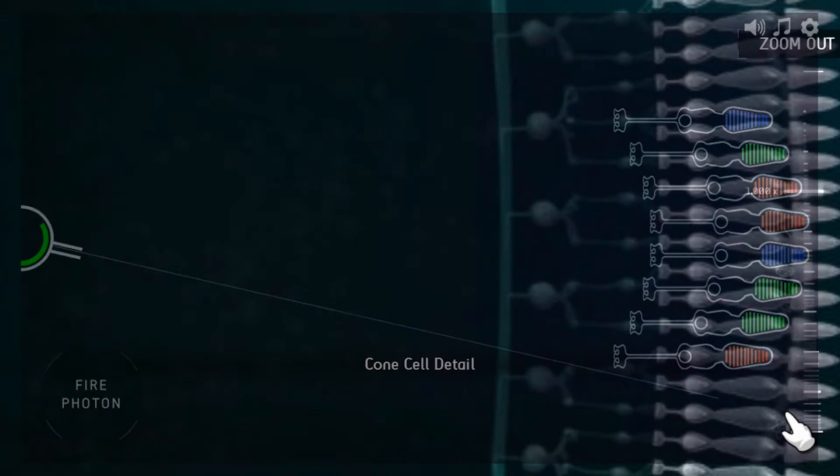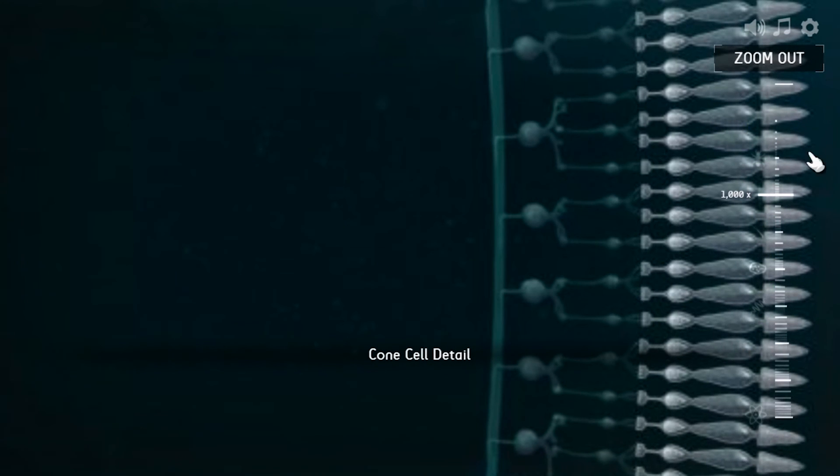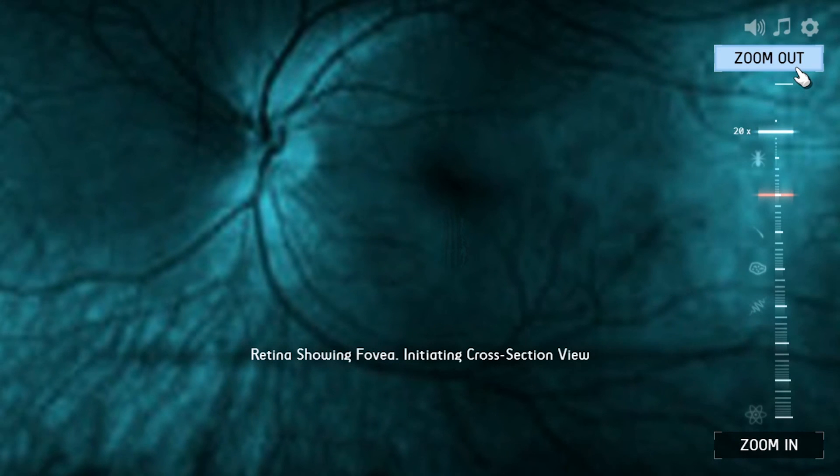And when a cone cell is hit by enough photons of the right colored light, it doesn't glow, but it does make an electrical signal that goes through a string of nerve cells to the optic nerve and then off to your brain for processing.